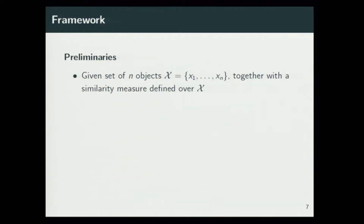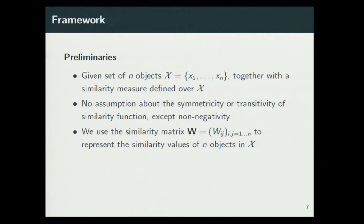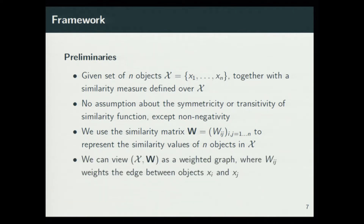Now the mathematical framework — the preliminaries. We are given a set X of N objects with a similarity measure defined over the set. We don't assume anything other than non-negativity of the similarity measure — we don't assume that it's symmetric or transitive. We store the similarity values for items in the set X in a matrix W. The pair X and W can be viewed as a weighted graph where the similarity corresponds to the weight of the edge between items.